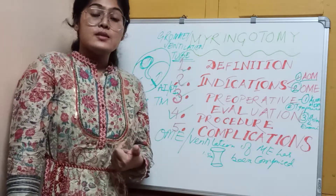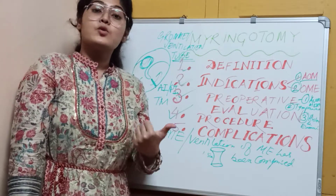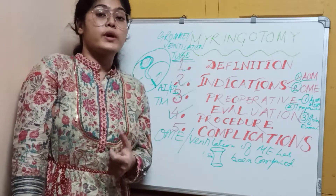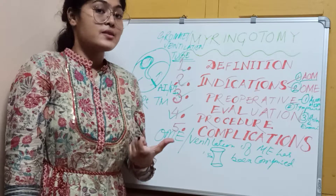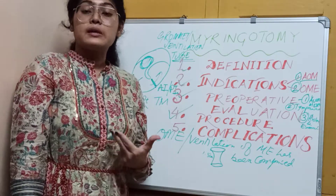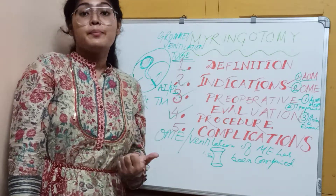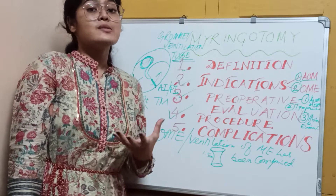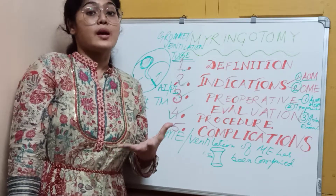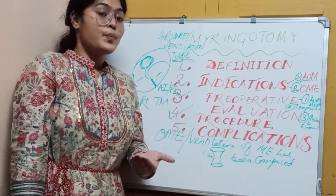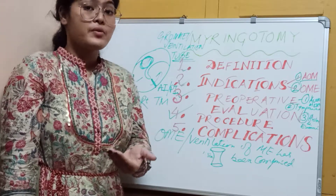Next, you should go for audiometry. In audiometry you will find a conductive hearing loss. Number three is tympanometry — in tympanometry, in otitis media with effusion, you get a Type B (flat) graph. These are the key points in pre-operative evaluation.